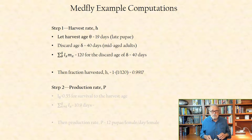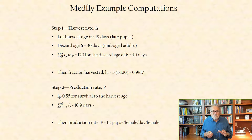Step 2, production rate P. Let L theta equal 0.55 for the survival to the harvest age, and the number of adult days from eclosion to discard age equal 10.9 days. P is computed from the formula, and thus equals 12 female pupae per adult female.